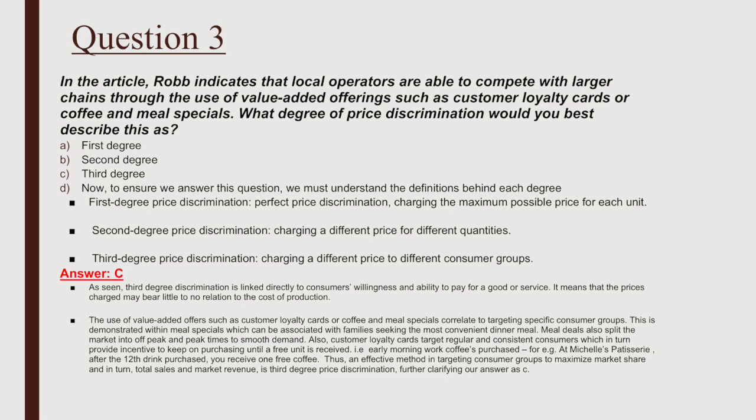Third degree discrimination is linked directly to consumer willingness and ability to pay for a good or service, meaning that prices charged may bear little to no relation to the cost of production. The use of value-added offers such as consumer loyalty cards or coffee and meal specials correlates to targeting specific consumer groups.